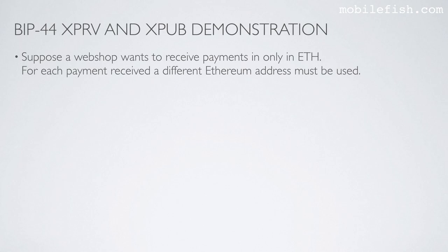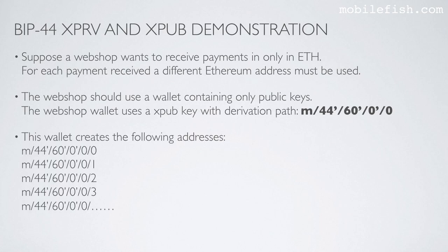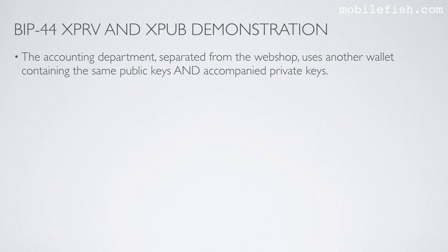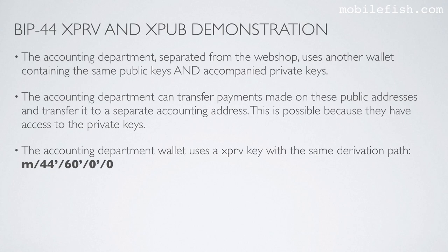Suppose a webshop wants to receive payments only in Ethereum. For each payment received, a different Ethereum address must be used. The webshop should use a wallet containing only public keys. The webshop wallet uses an extended public key with derivation path m slash 44 prime slash 60 prime slash 0 prime slash 0. The accounting department, separated from the webshop, uses another wallet containing the same public keys and accompanied private keys. The accounting department can transfer payments made on these public addresses to a separate accounting address because they have access to the private keys. The accounting department wallet uses an extended private key with the same derivation path m slash 44 prime slash 60 prime slash 0 prime slash 0.